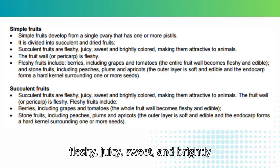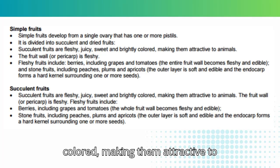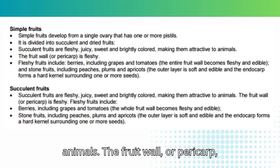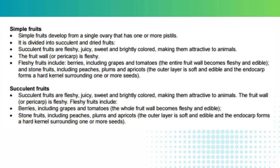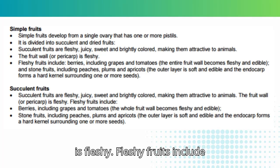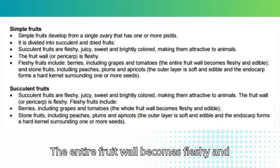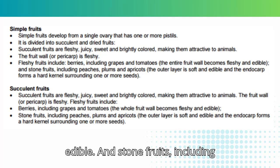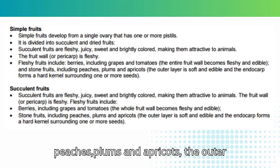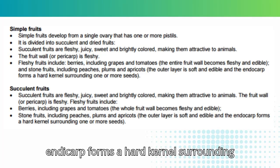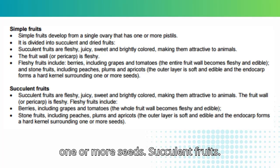Succulent fruits are fleshy, juicy, sweet and brightly colored, making them attractive to animals; the fruit wall or pericarp is fleshy. Fleshy fruits include berries — such as grapes and tomatoes — where the entire fruit wall becomes fleshy and edible; and stone fruits — including peaches, plums and apricots — where the outer layer is soft and edible and the endocarp forms a hard kernel surrounding one or more seeds.